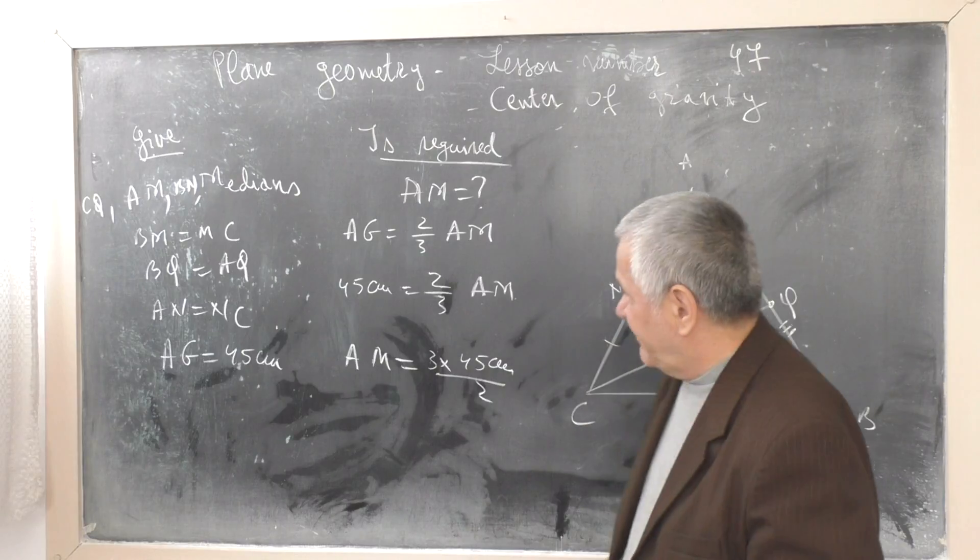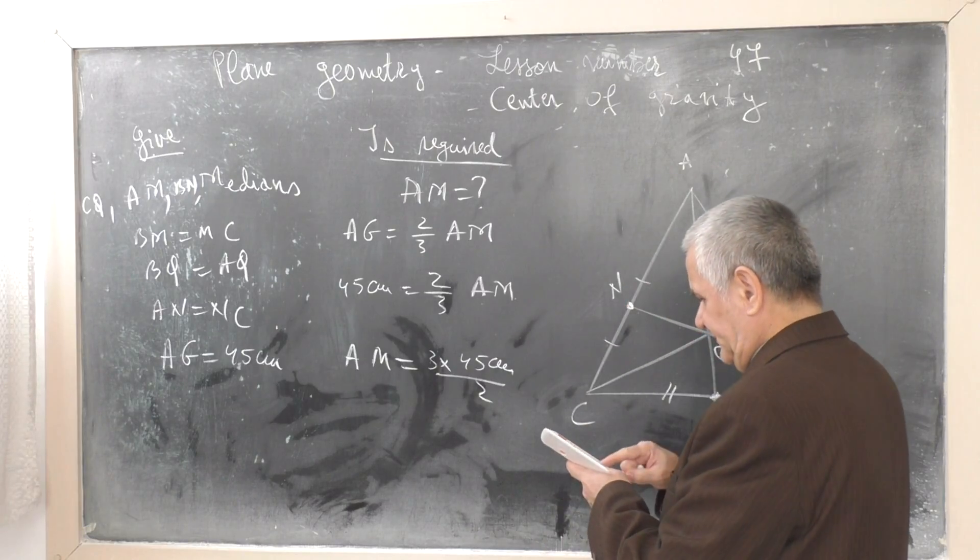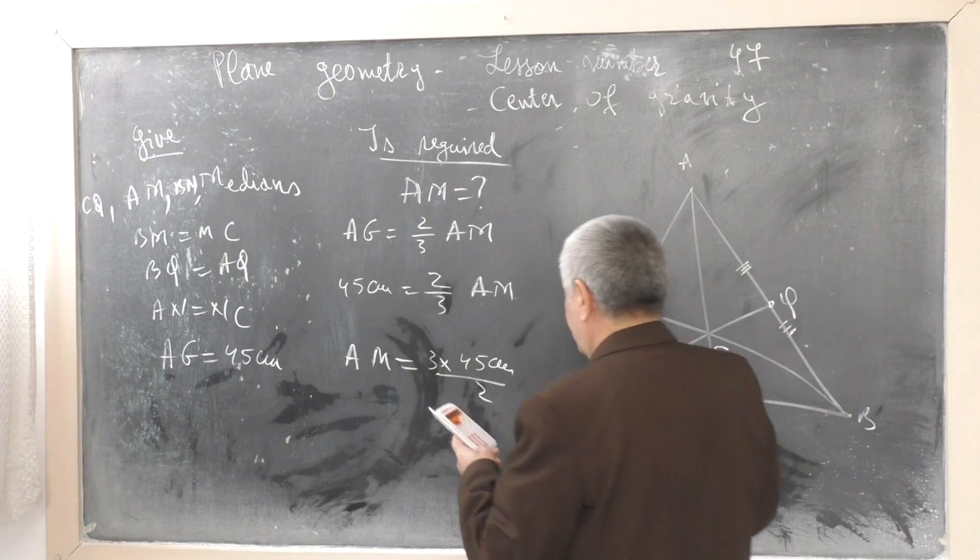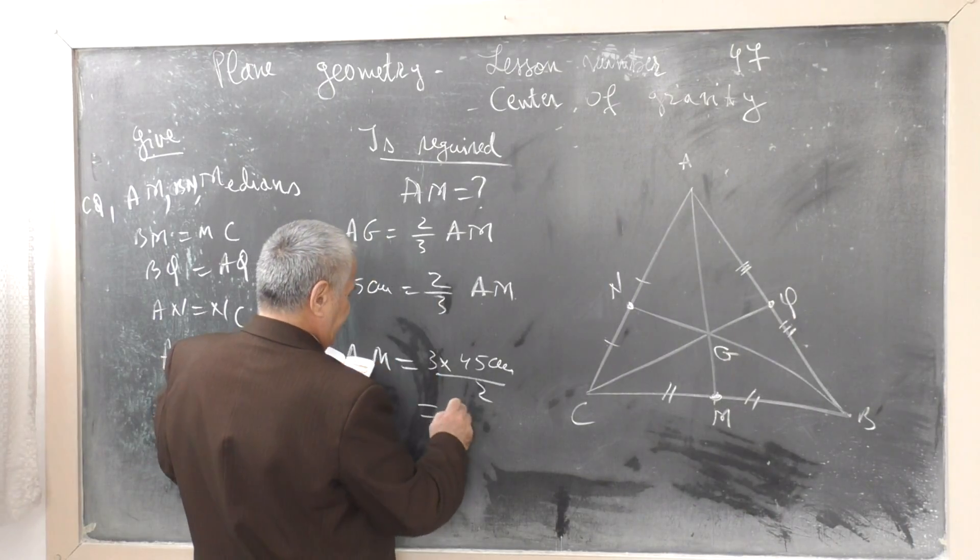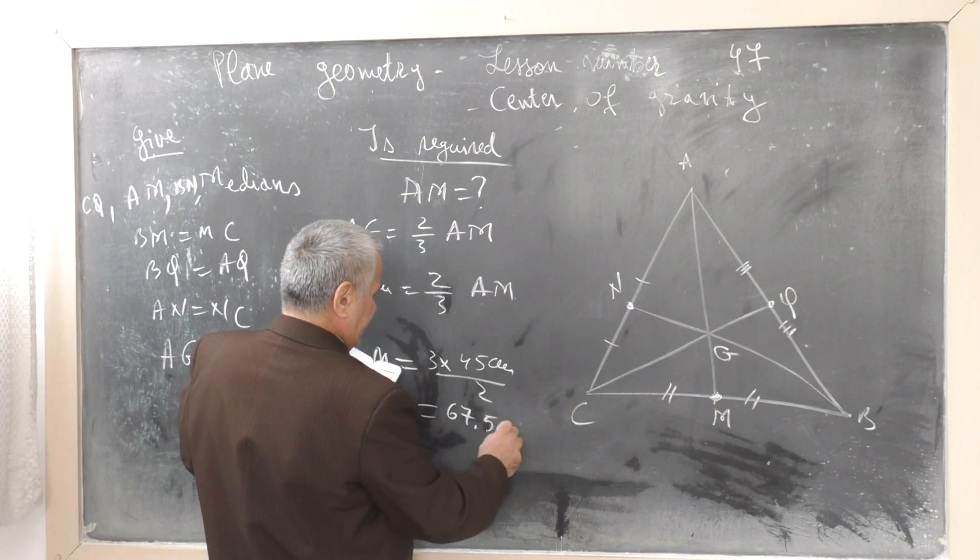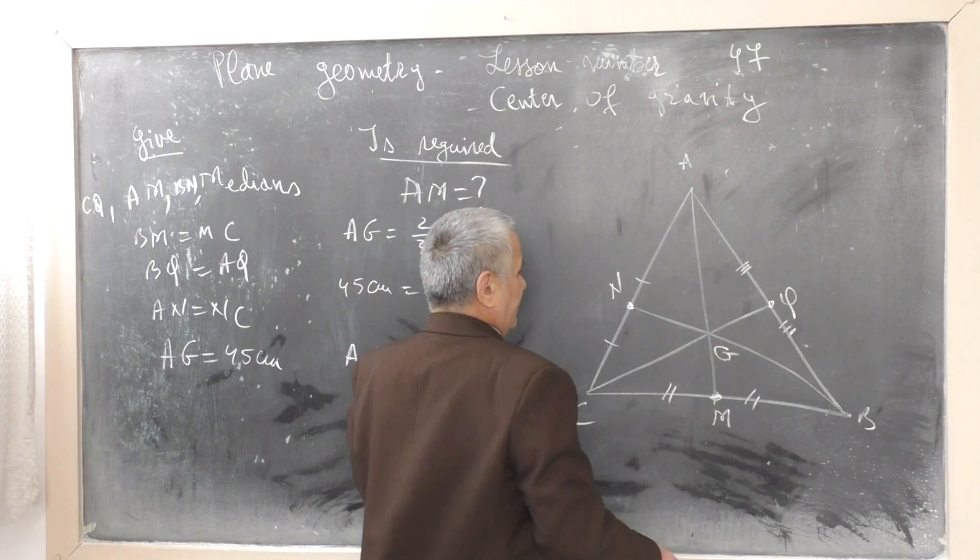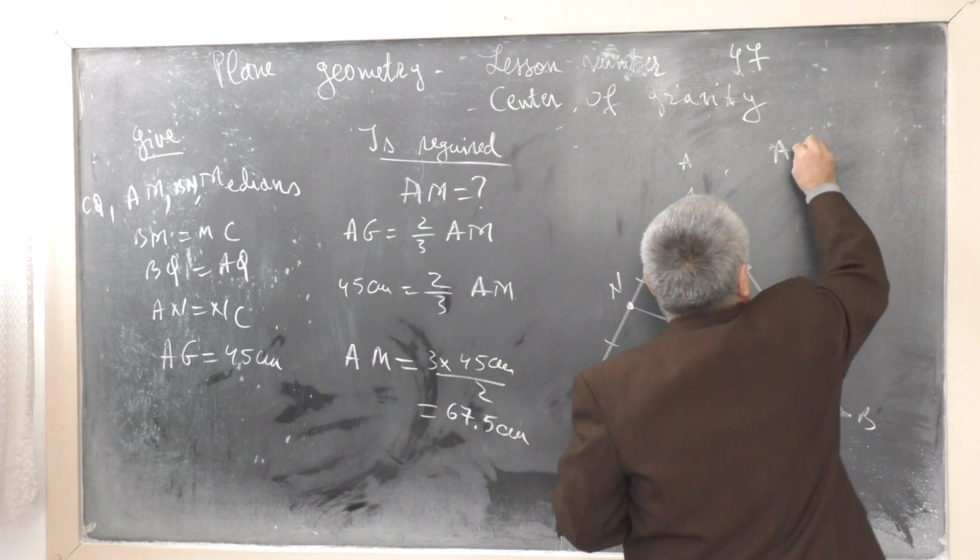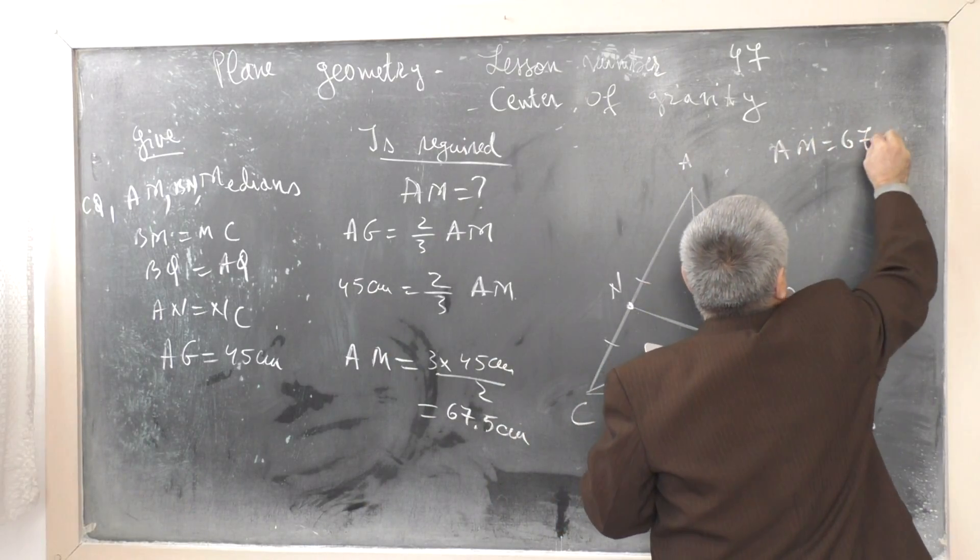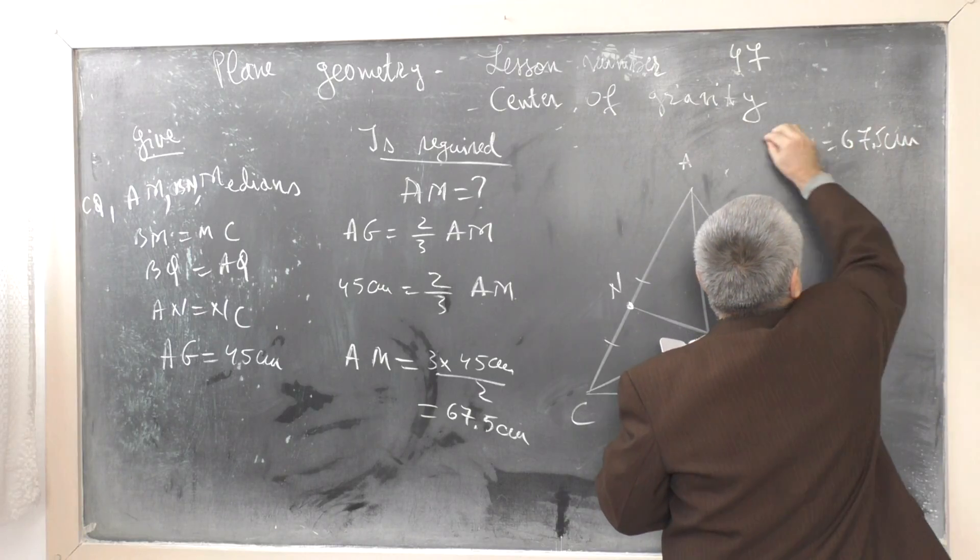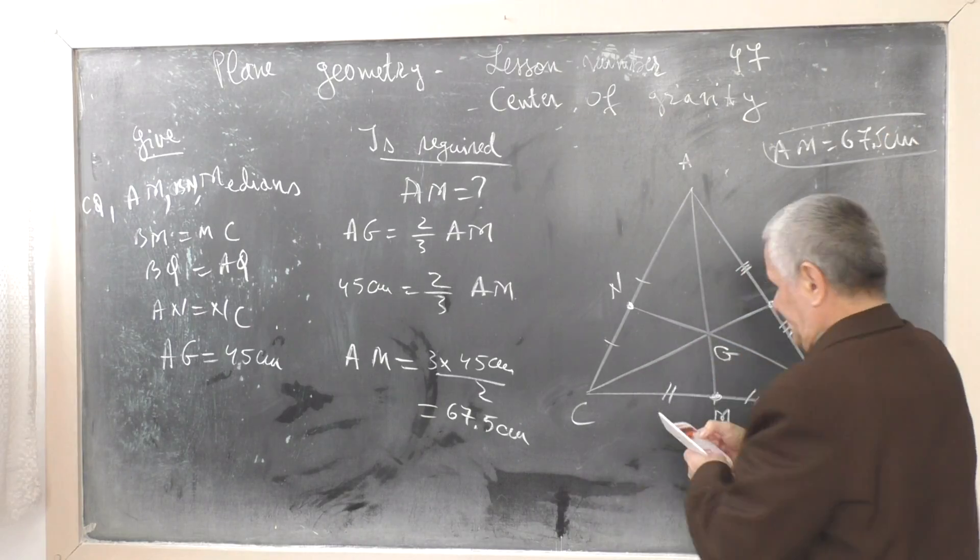Calculating the fraction: 3 multiplied by 45 divided by 2 equals 67.5 cm. Result: AM equals 67.5 cm.